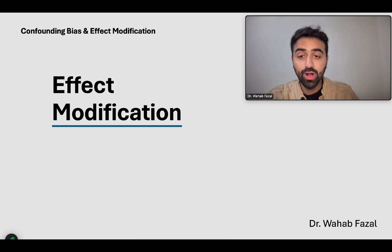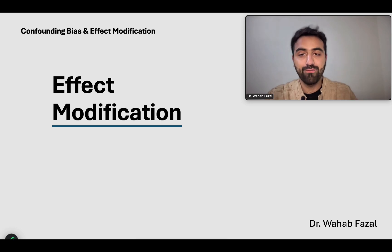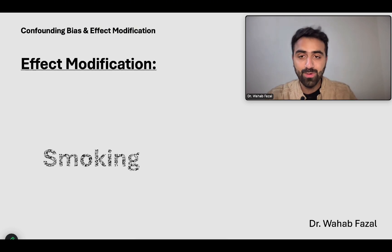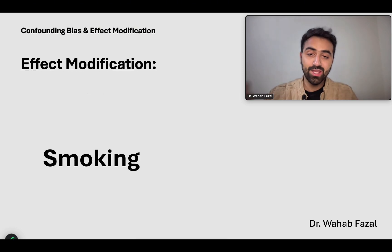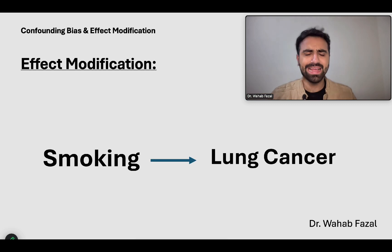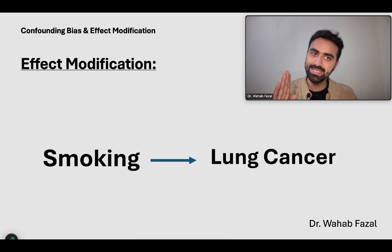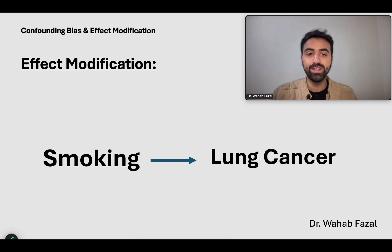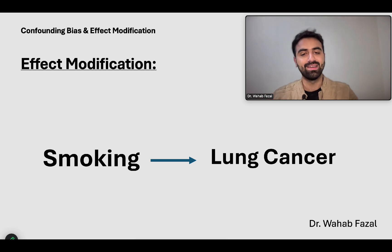Now let's talk about effect modification and how it is different from confounding. Let's say you want to study the association between smoking and lung cancer. We know that this association actually exists in real life — that smoking does in fact lead to lung cancer.